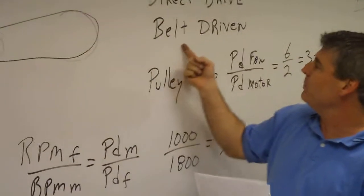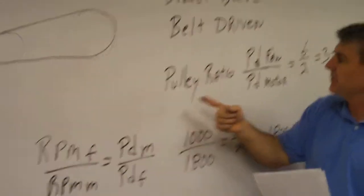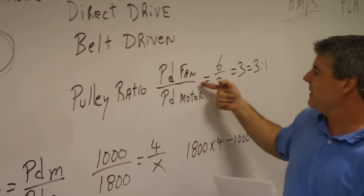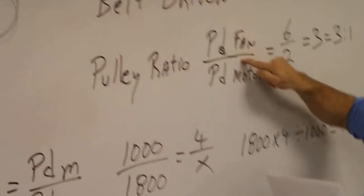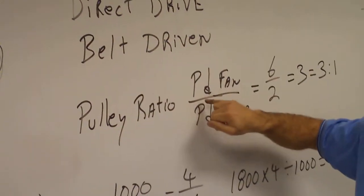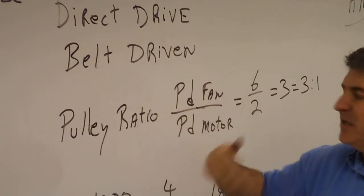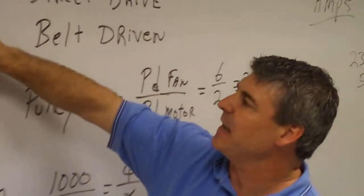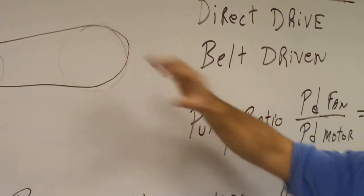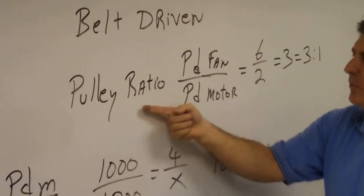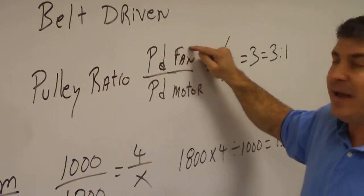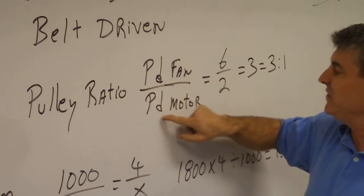We have what we refer to on belt driven systems as a pulley ratio. PD means pitch diameter—that simply means the outside diameter of the pulley or sheave. The calculation to come up with the pulley ratio is pitch diameter of the fan divided by the pitch diameter of the motor would give you the pulley ratio.